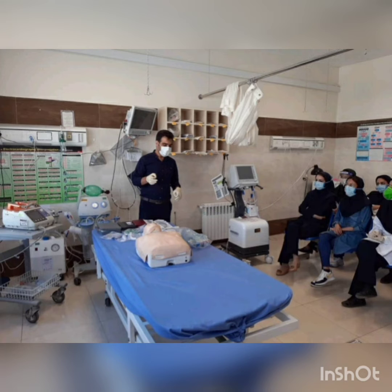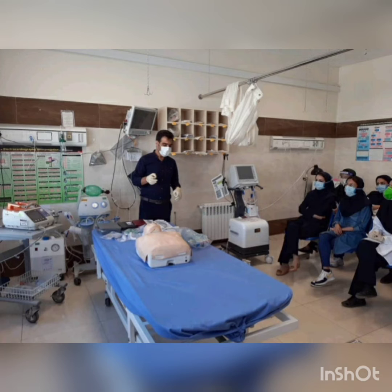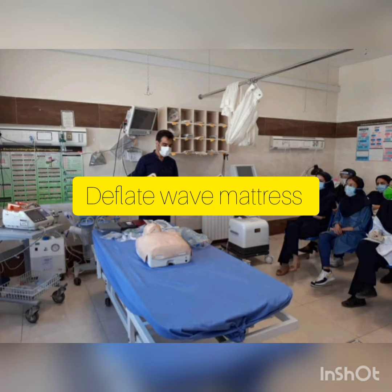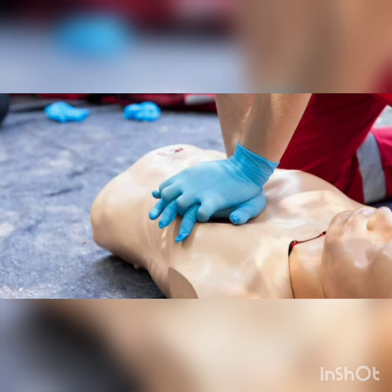How do we manage cardiac arrest? First, we initiate chest compression as soon as possible. We flatten the bed and deflate the wave mattress. Shout for help. You may want to put a chair under your legs so you have more control on the patient's chest. The next person that comes has to check the patient's ECG, which may be possible with a defibrillator.